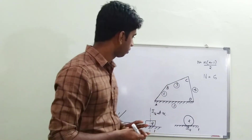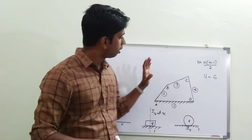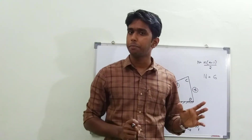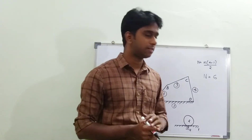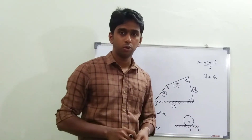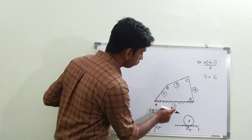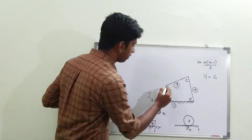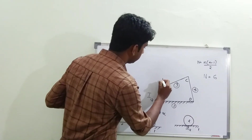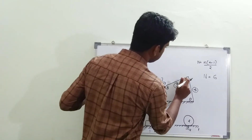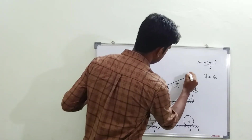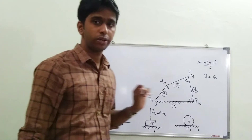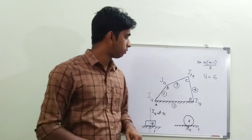First we locate all the primary instantaneous centers. We can locate these by visual examination using the given rules. The instantaneous center between links 1 and 2 is the pivot center I12. Similarly, the I-center between links 2 and 3 is I23, between links 3 and 4 is I34, and between links 1 and 4 is I14. So we have already located all four primary instantaneous centers by visual inspection.